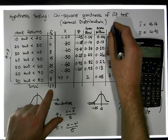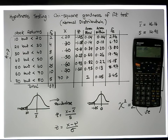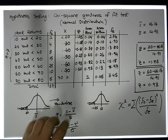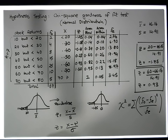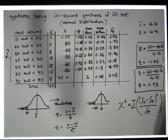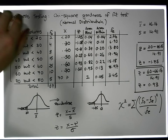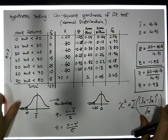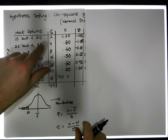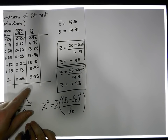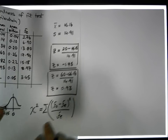Those are our expected frequencies. Now that we've calculated our expected frequencies, we can actually do our test of difference — we can undertake our chi-squared goodness of fit test. We have our observed frequencies and we've calculated our expected frequencies, so now we can do the chi-squared goodness of fit test.